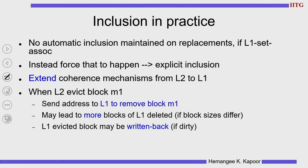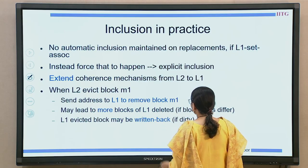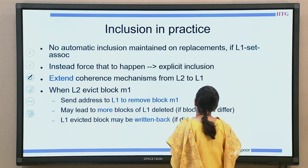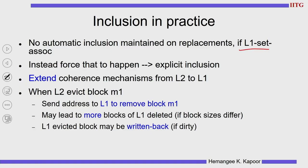In practice, making L1 a direct map cache puts further restrictions on hits and misses, so we want L1 to be set associative — not very large, but a reasonable set associative cache. If you want to do this, then inclusion is not automatically guaranteed. So can we enforce and make inclusion explicit? Can we be alert and keep maintaining inclusion as we keep accessing blocks? To do this, we are going to use the coherence-related protocols and actions. Can I extend that between L1 and L2 so that inclusion is guaranteed?